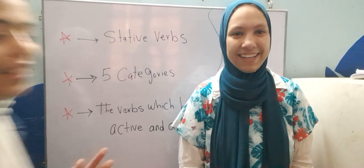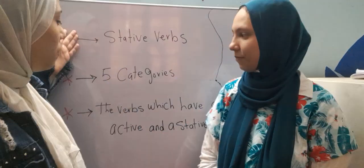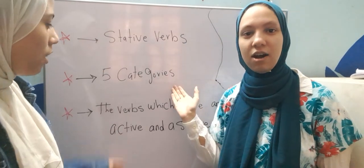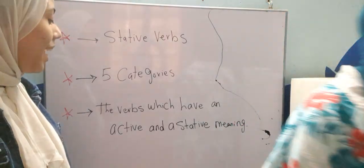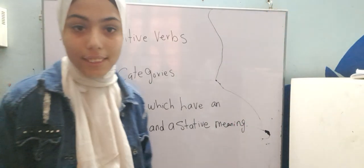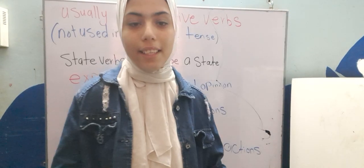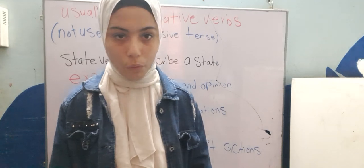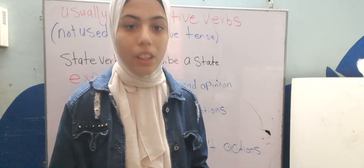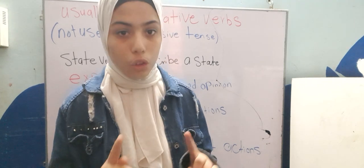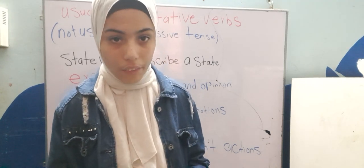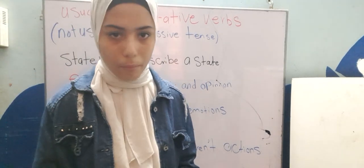Hi, I'm Nora. And I'm Radha. And today we will learn together about the static verbs and the five categories of the static verbs, and the verbs which have an active and static meaning. And the static verbs, as I mentioned before, are usually not used in progressive tenses — usually, not never, because it can sometimes come.